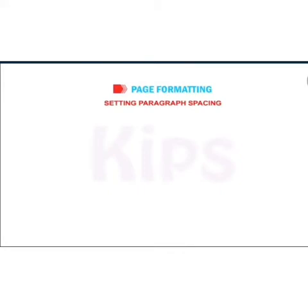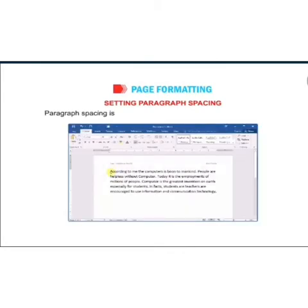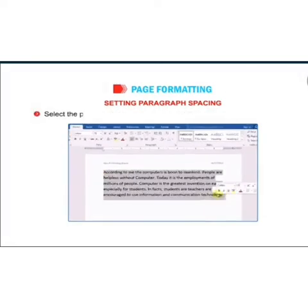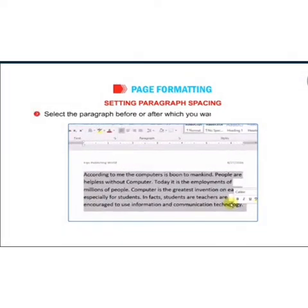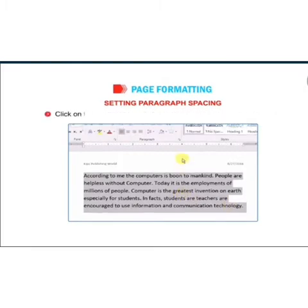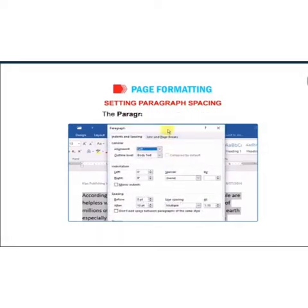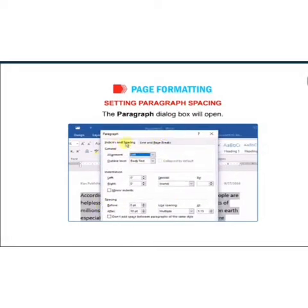The next point is setting paragraph spacing. Paragraph spacing is the amount of space above or below the paragraph. To set the paragraph spacing, first select the paragraph before or after which you want to change the spacing, then click on the paragraph dialog box launcher on the Home tab and the paragraph dialog box will open.